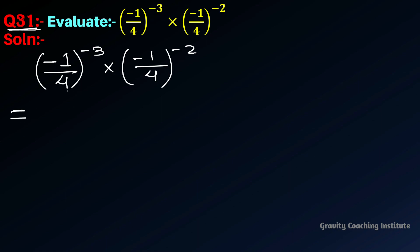So here both bases are identical, so we can add the exponents. Since we know that a^m × a^n = a^(m+n).